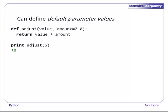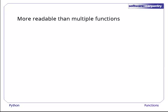If we call this function with one parameter, it is assigned to value and 2.0 is used for amount. If we call it with two parameters, the second overrides the default for amount. One function with default values is usually easier to read than several functions, each taking a different number of parameters.